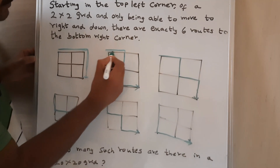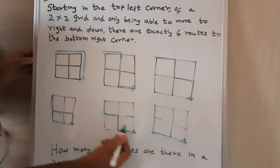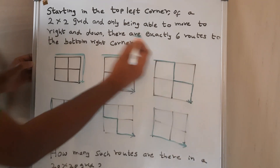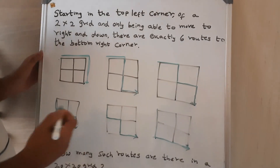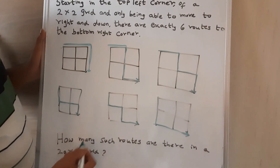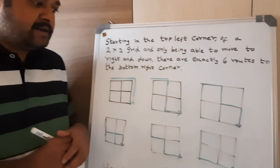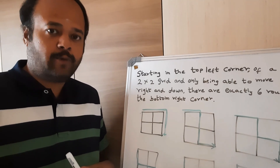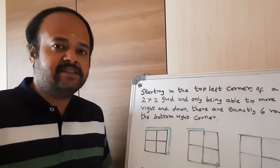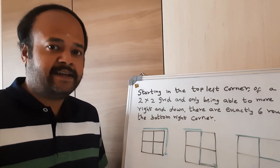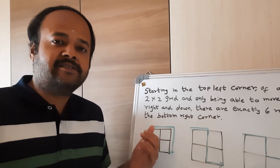The first route goes from here to here. The second route goes from here, here, here and here. And this is the third route, fourth, fifth and sixth. So exactly there are six routes to go from the top left to the bottom right. The question is how many such routes are there in a 20 by 20 grid? When we talk about the solution, we will generalize it to an n by n grid, and 20 by 20 will be just an instance of that.